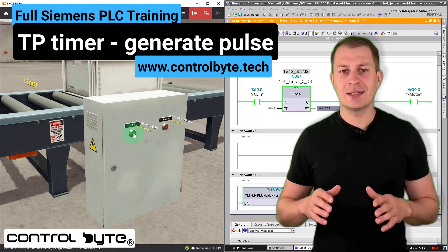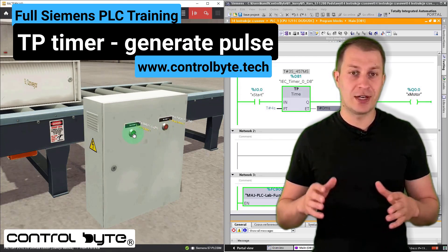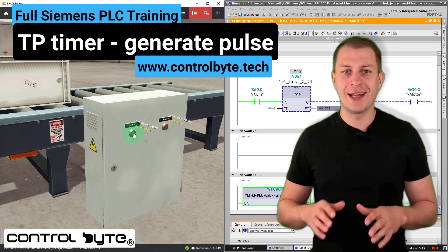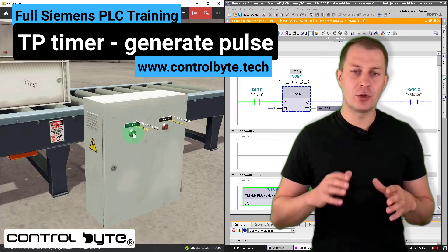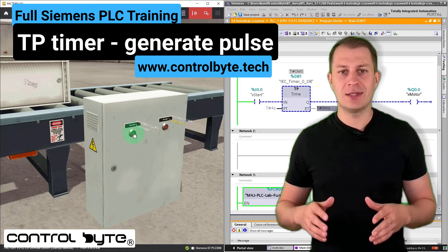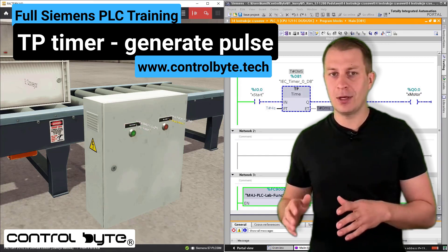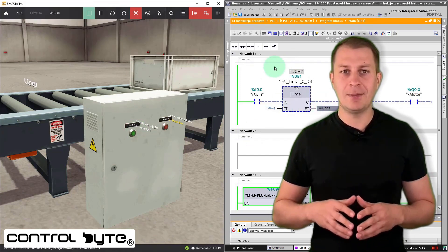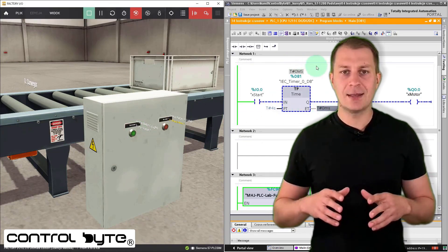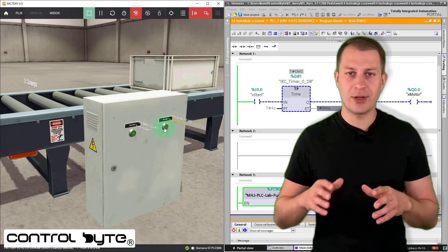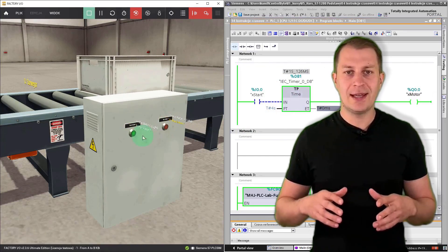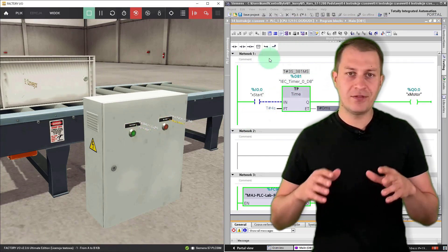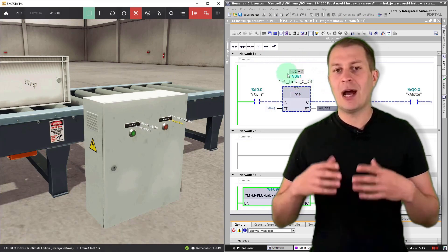We'll discuss the TP instruction first, which allows you to create a signal pulse of a specific duration. This timer type is defined as a DB block in the PLC memory. It consists of two inputs, IN and PT. IN accepts the signal from the last logic operation, while PT takes in the time that defines the duration of our output pulse.